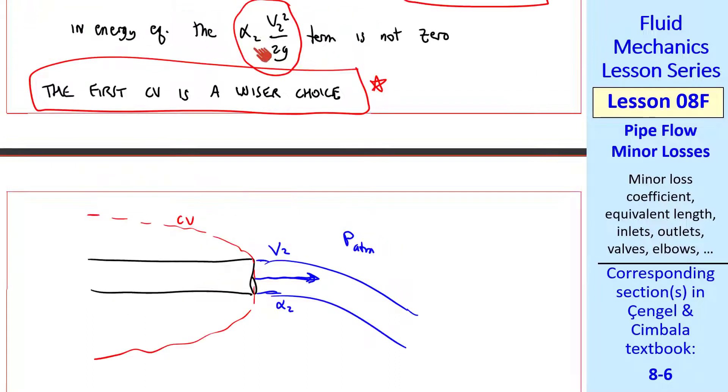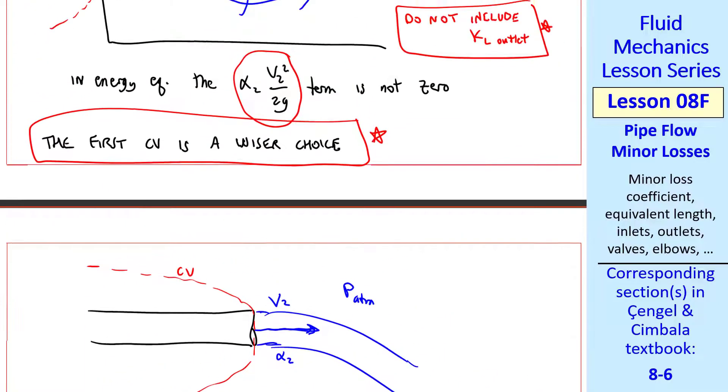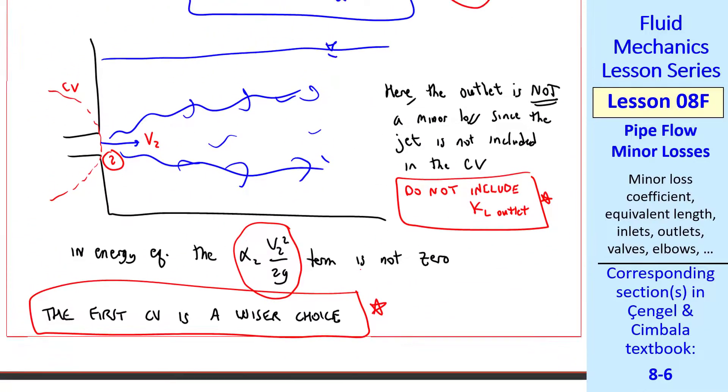For this control volume, you would include this alpha 2 V2 squared over 2 G term in the energy equation, but you would not have a minor loss at this outlet, since our control volume does not include any jet dissipation. So this kind of outlet is really the same thing as this kind of outlet.